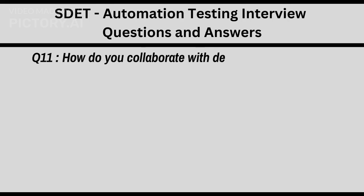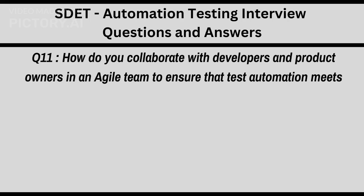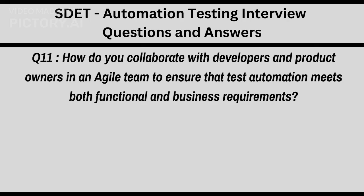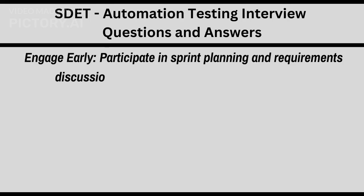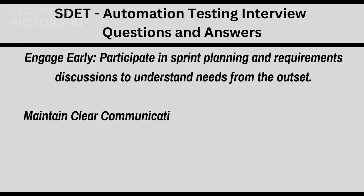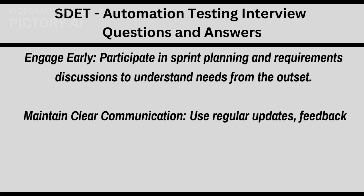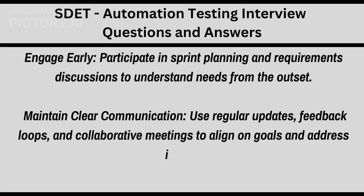Q11: How do you collaborate with developers and product owners in an agile team to ensure that test automation meets both functional and business requirements? Engage early: participate in sprint planning and requirements discussions to understand needs from the outset. Maintain clear communication: use regular updates, feedback loops, and collaborative meetings to align on goals and address issues.